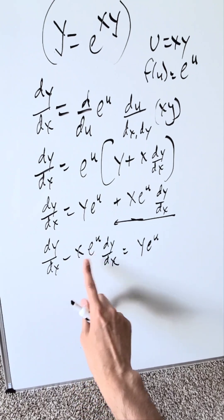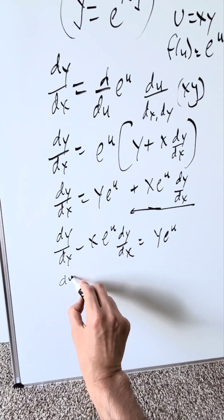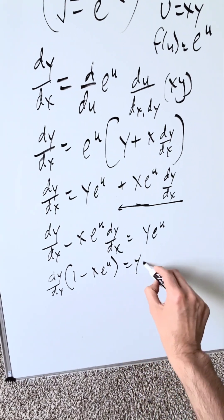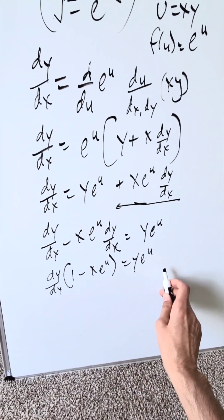Isolate dy/dx and push everything else onto the other side. I have here dy/dx times (1 minus x times e to the u) equals y times e to the u. Now we push this term onto the other side, it will divide.